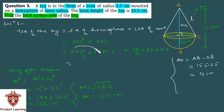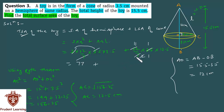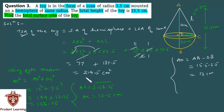Simplifying: 2 × 3.5 = 7, which cancels with the denominator 7, giving 22 × 3.5 = 77. For the cone term, (22/7) × 3.5 × 12.5 = 11 × 12.5 = 137.5. Adding: 77 + 137.5 = 214.5 cm². So the total surface area of the toy is 214.5 cm². This completes our solution.